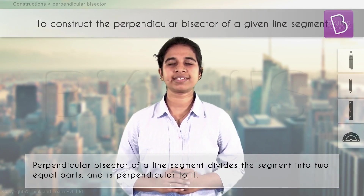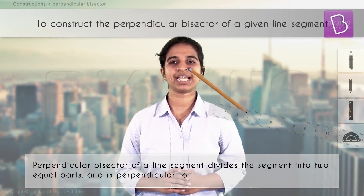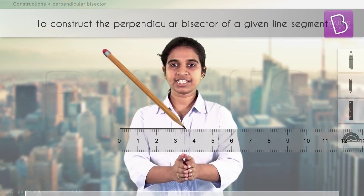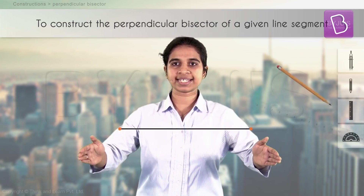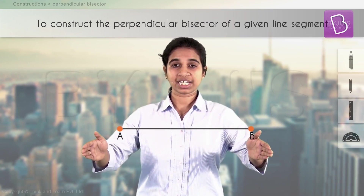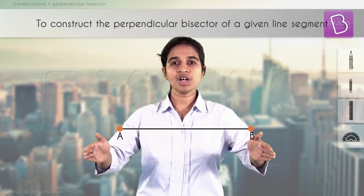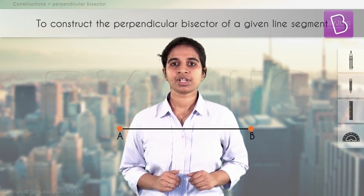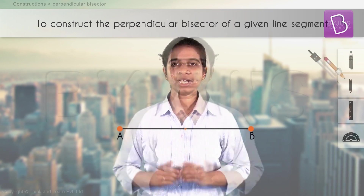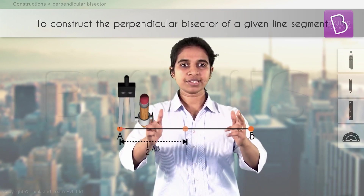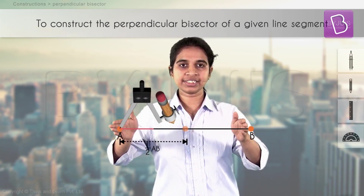Let's now see how to draw the perpendicular bisector of a given line segment. Let's say we are given line segment AB and we need to draw its perpendicular bisector. Take a compass and take a distance more than half of AB.